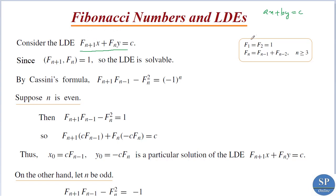We know the Fibonacci numbers are f1 equal to 1, f2 equal to 1, and fn equal to fn-1 plus fn-2. So the Fibonacci numbers are 1, 1, then 1 plus 1 that is 2, then 1 plus 2 that is 3, then 2 plus 3 that is 5, then 3 plus 5 that is 8, and so on. These are the Fibonacci numbers.